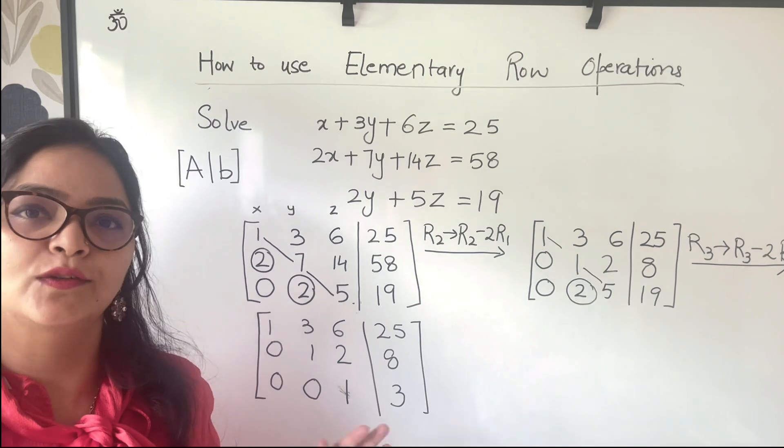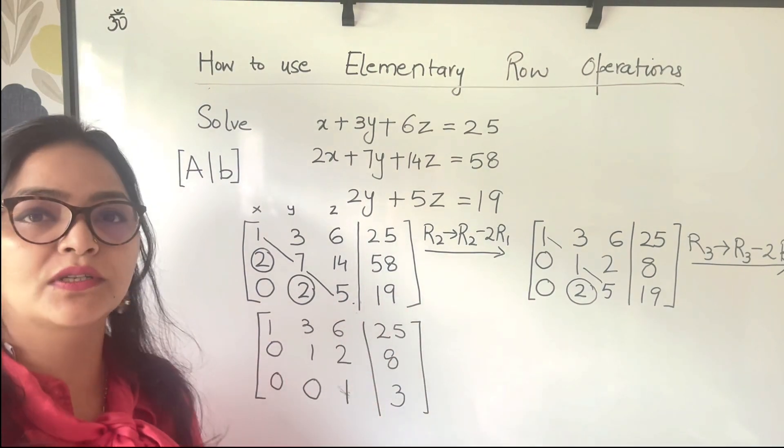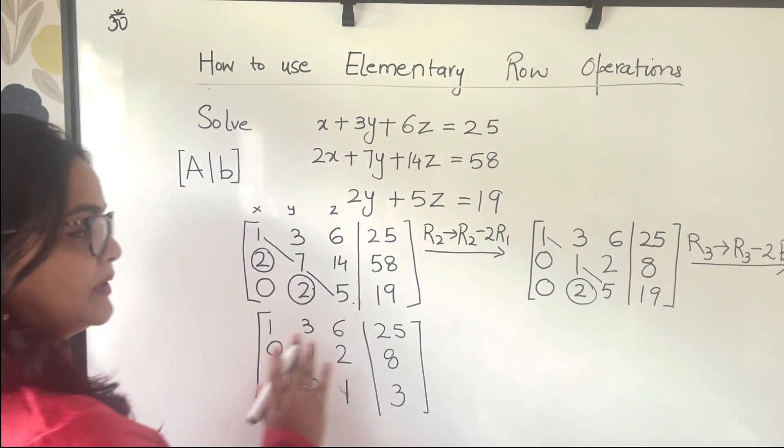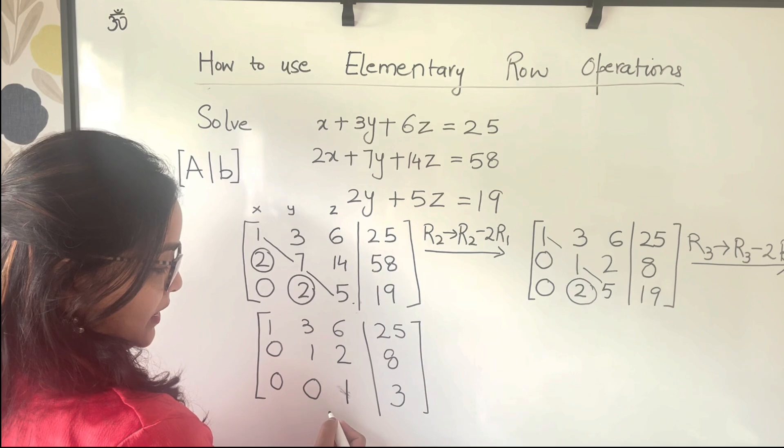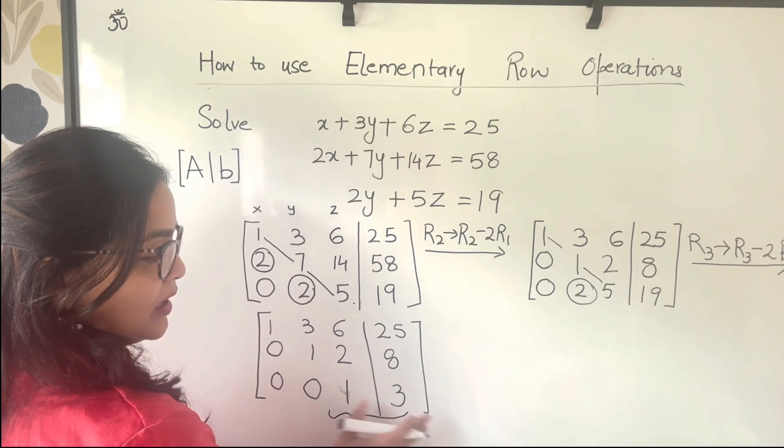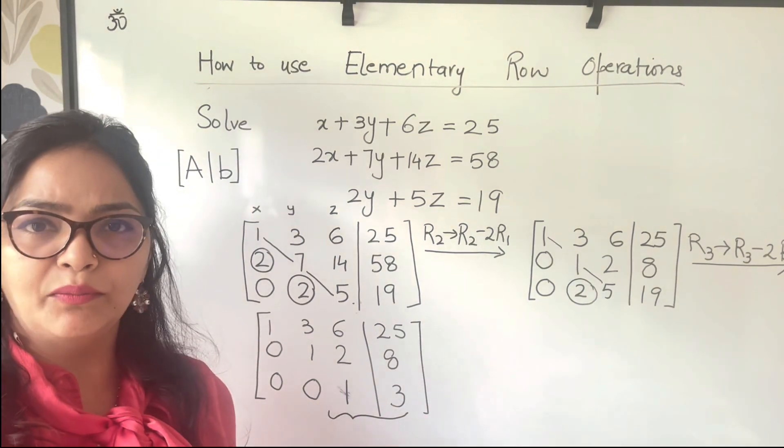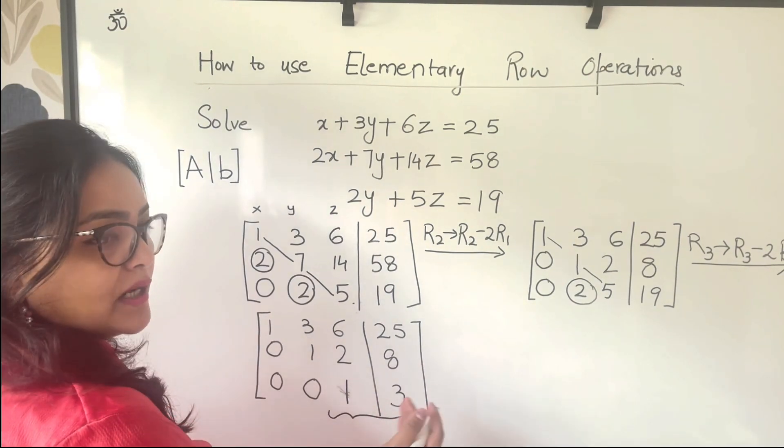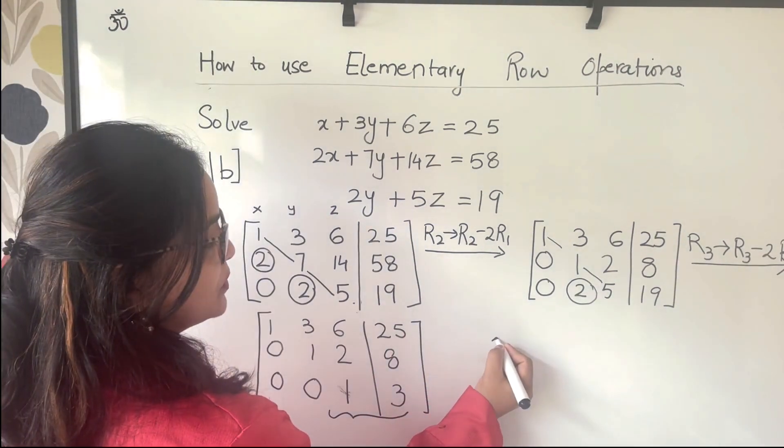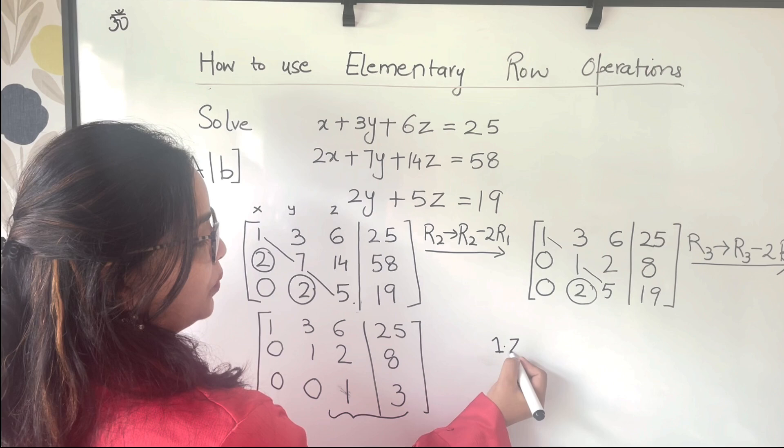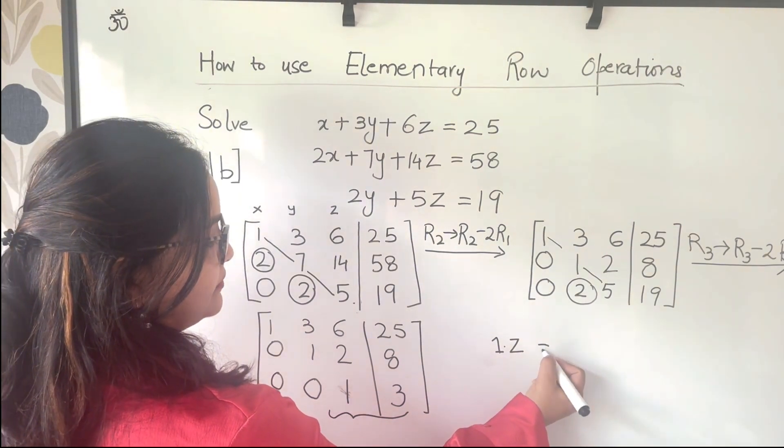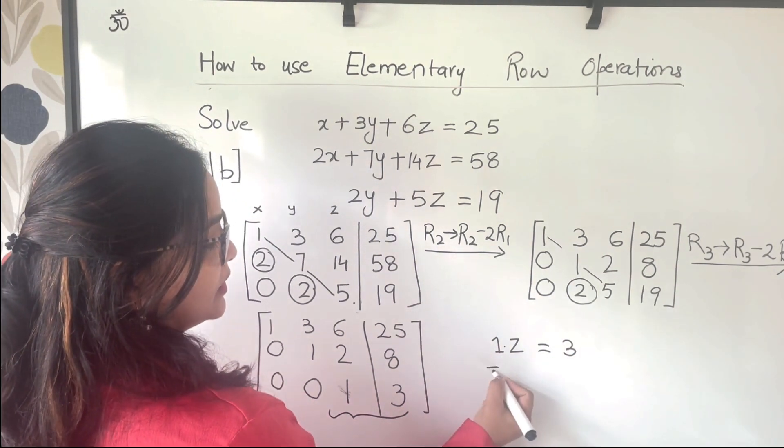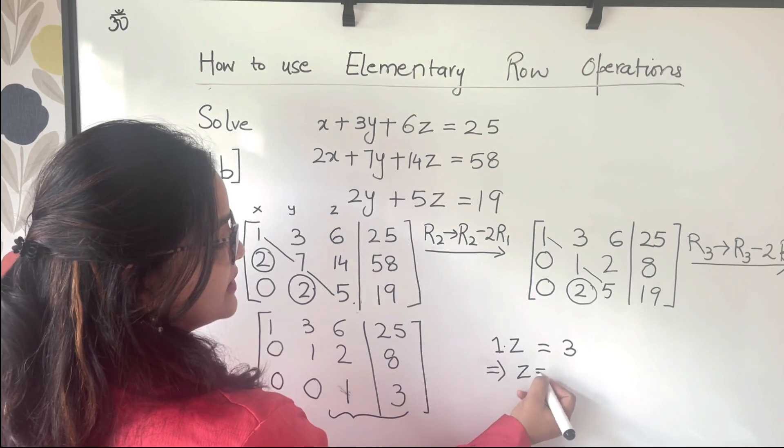Now, how do we get a solution from this reduced system? From this reduced system, try to translate your last row, which is the most simplified row as of now. Try to write it down as an equation. So what you have is 1 times z is equal to 3, which means that z turns out to be 3.